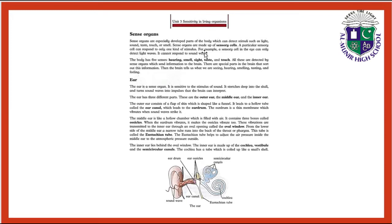For example, a sensory cell in the eye can only detect light waves — it cannot respond to sound waves. The body has five senses: hearing, smell, sight, taste, and touch. All these are detected by sense organs which send information to the brain.